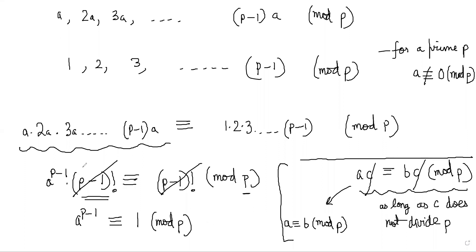Basically I'm saying c and p must be relatively prime — gcd(c, p) = 1 — then you can cancel. Once you cancel you get Fermat's Little Theorem. Now it is very important to be careful about this theorem because the converse is not true.